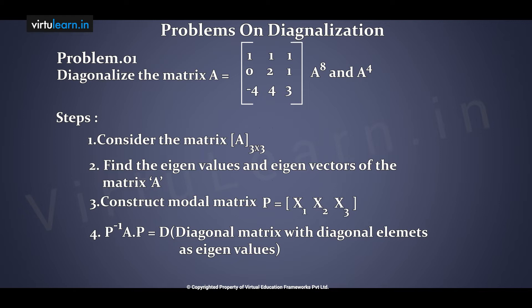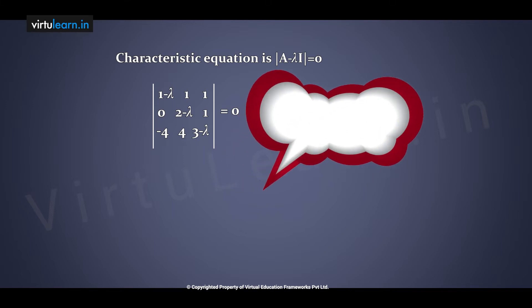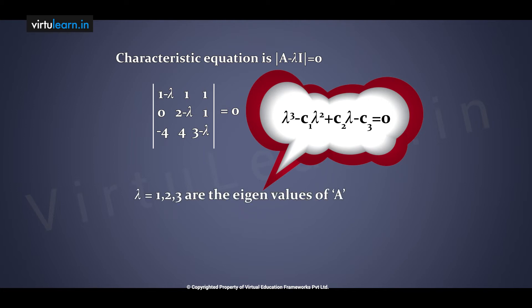For this problem, consider the characteristic equation: determinant of (A minus lambda I) equal to 0. Expanding the determinant gives lambda cube minus c1·lambda square plus c2·lambda minus c3 equal to 0. We get the eigenvalues lambda equal to 1, 2, 3 as the eigenvalues of A.